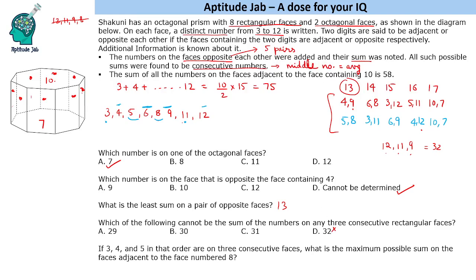Now, 12 + 11 + 7 is not possible because 7 is on an octagonal face, not a rectangular face. Taking 12 + 11 + 6 = 29 is possible. If we exclude 11 and take 12 + 9 + 8 = 29, also possible. We find that we cannot generate a sum of 30 using any 3 of the rectangular face numbers, so 30 is the answer.